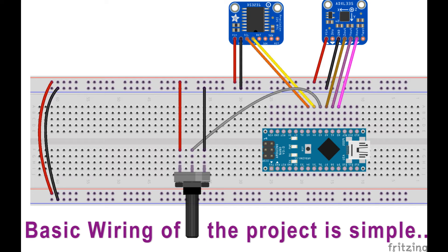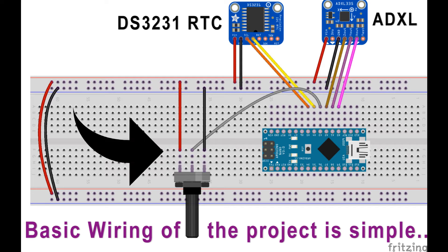The setup is simple. All you need is the RTC module hooked up to the I2C bus, a gyro — whether it be I2C or analog like this one — and then a 10k potentiometer to adjust the input going to the final analog pin that it uses for its calculation to update the EEPROM.